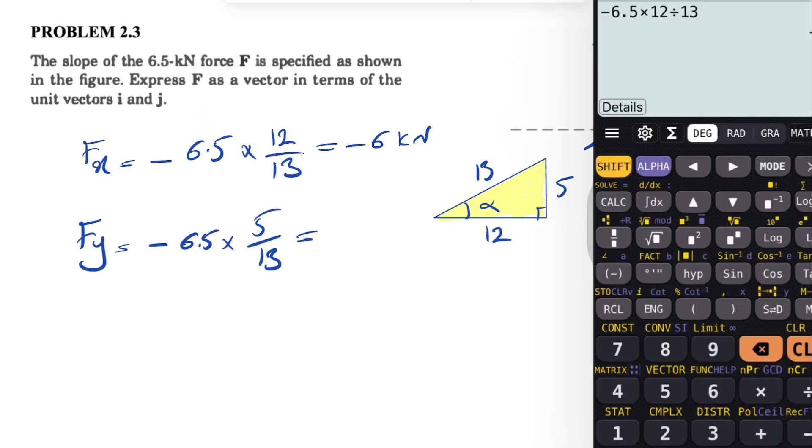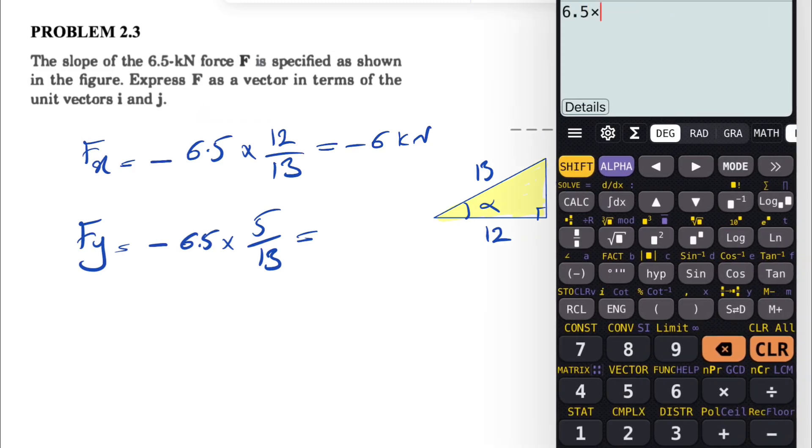So basically, 6.5 times 5 divided by 13. That's going to be minus 2.5 kilonewtons.